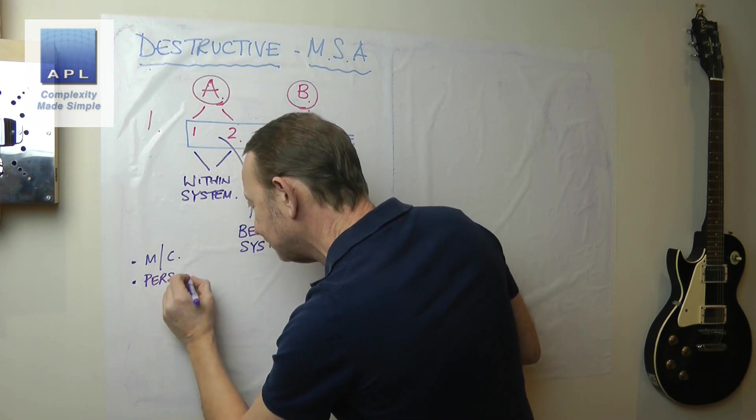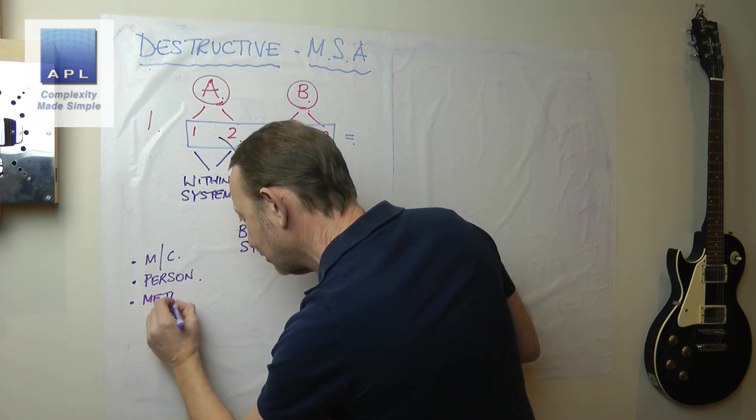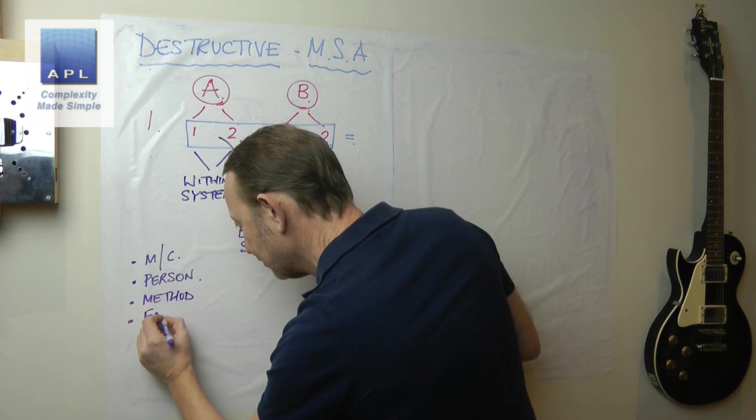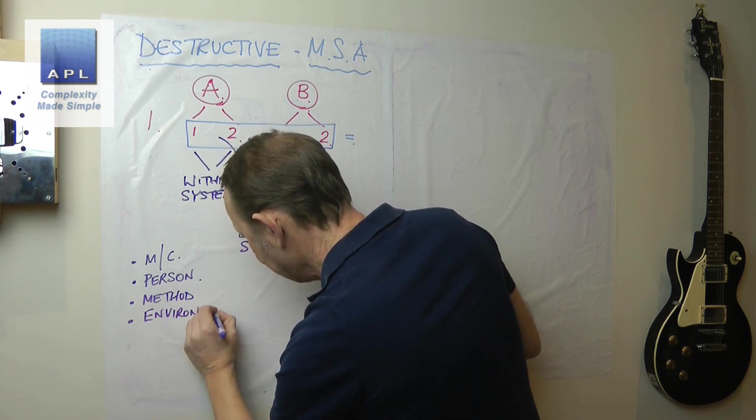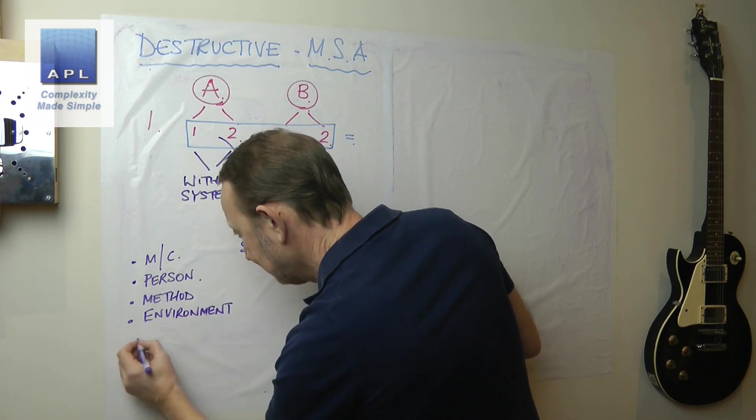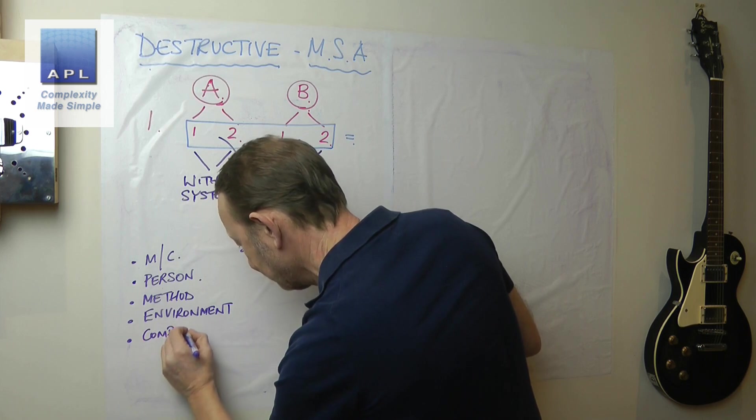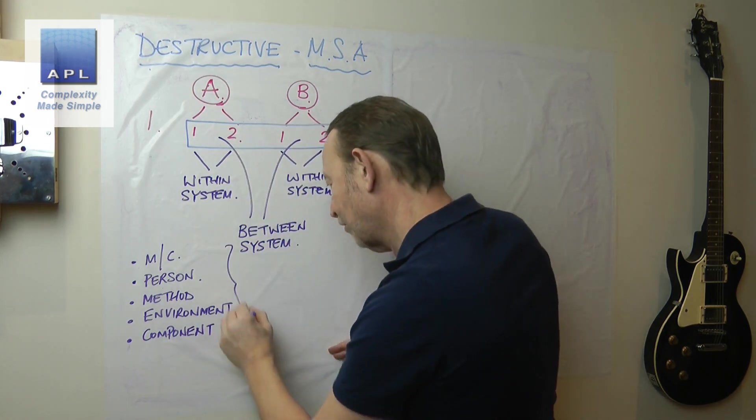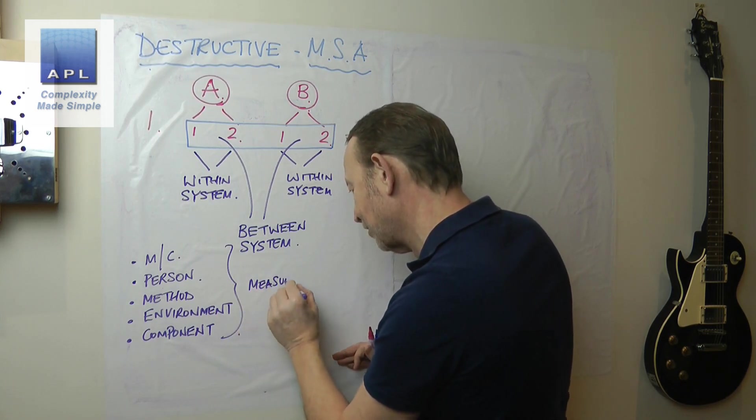The person, the method they are using. The person, the method they are using. The environment they work in, and the parts, the component. And all of those together is a measurement system.